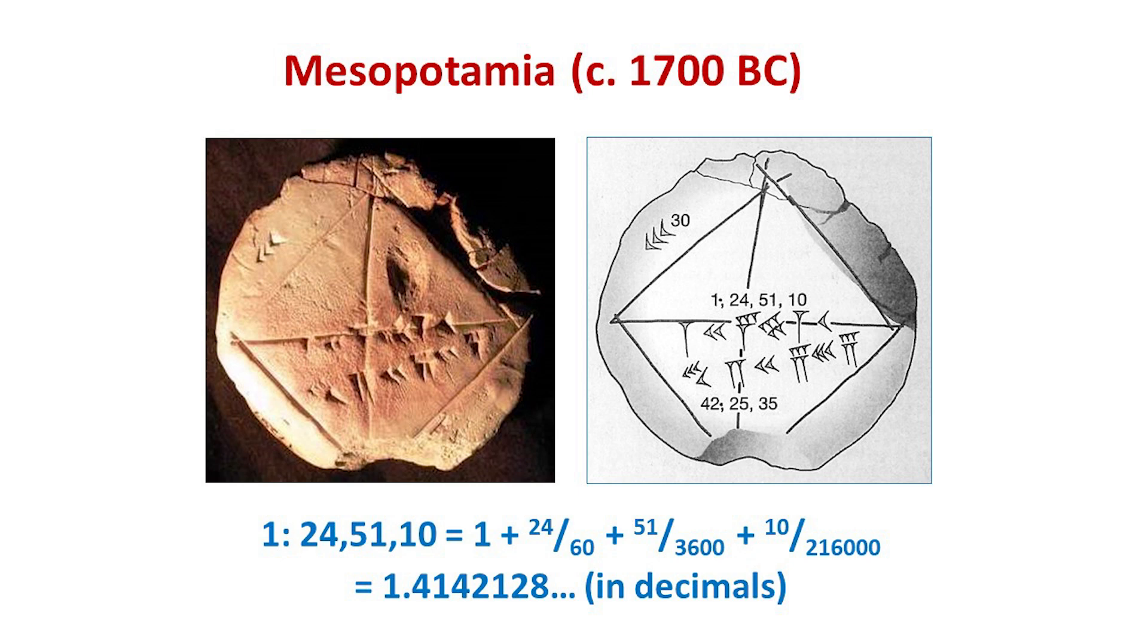But although the Pythagoreans may have been the first to prove the theorem, the result had already been known in Mesopotamia a millennium earlier. The Mesopotamians, or Babylonians, wrote with a stylus on clay tablets, and many thousands of mathematical tablets have survived.